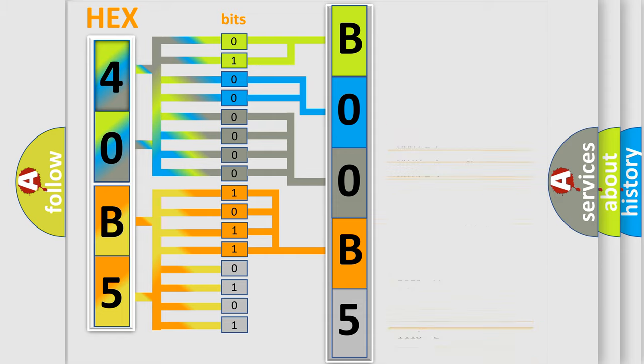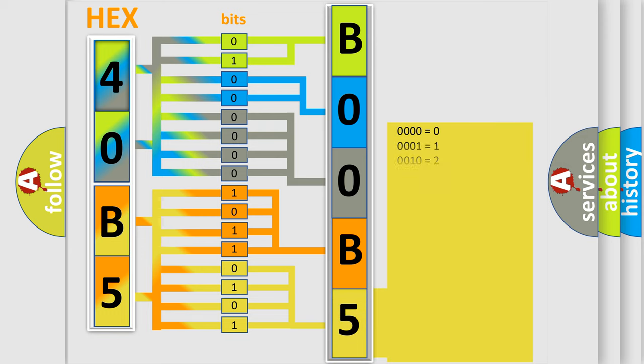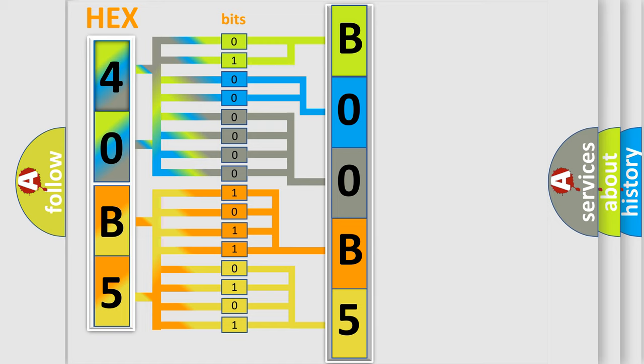A single byte conceals 256 possible combinations. We now know in what way the diagnostic tool translates the received information into a more comprehensible format.